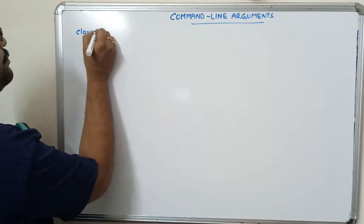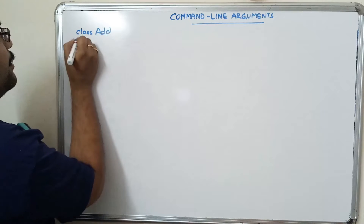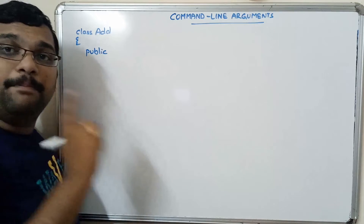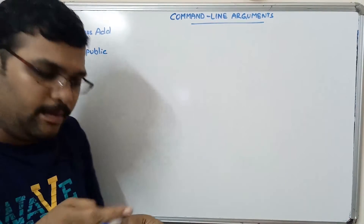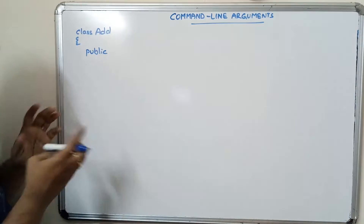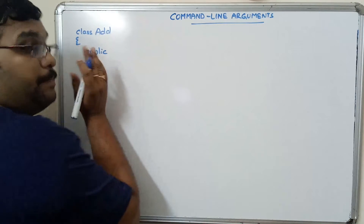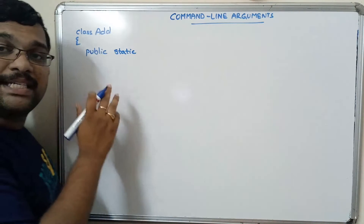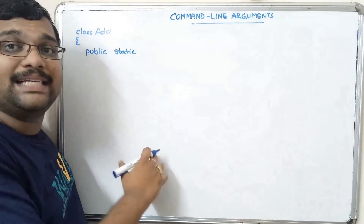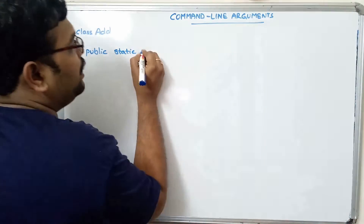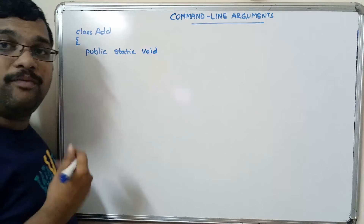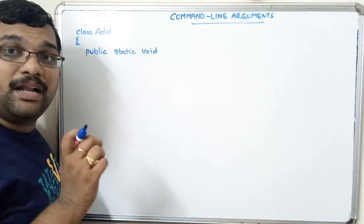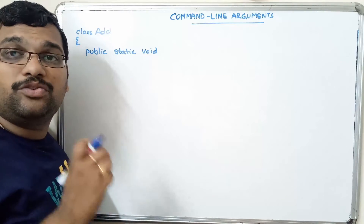We create a class called Add, then write the main function. It should be public so it is available to all classes, and also static — if it is public and static it will be available for all the classes in the program. The return type is void since it doesn't return any value. In Java, every function must have a return type; if you don't specify one it will give an error.